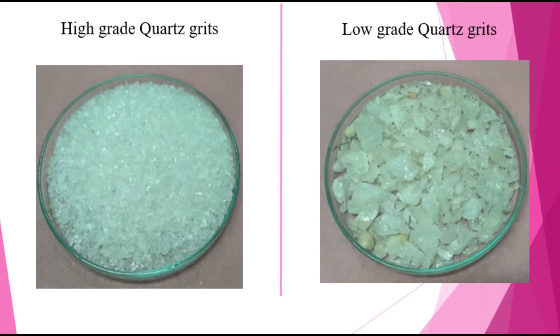For low grade quartz, sometimes we also have to do a leaching process. After crushing we produce powder, then remove the majority of the iron — we call that total iron. After that we do leaching. High grade quartz may also sometimes need leaching to remove extra iron.